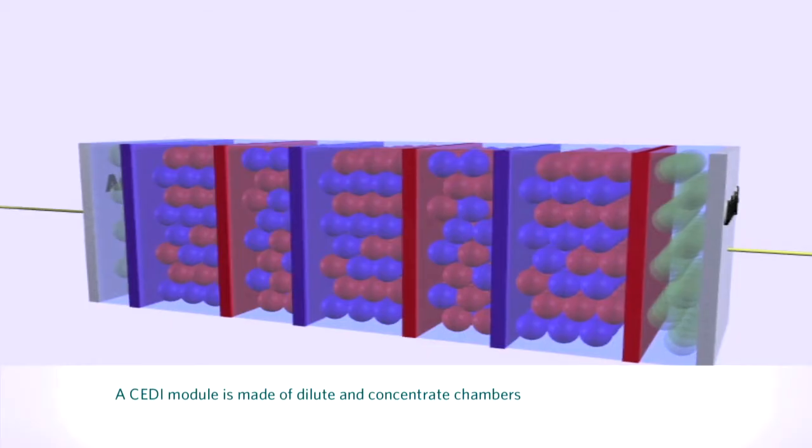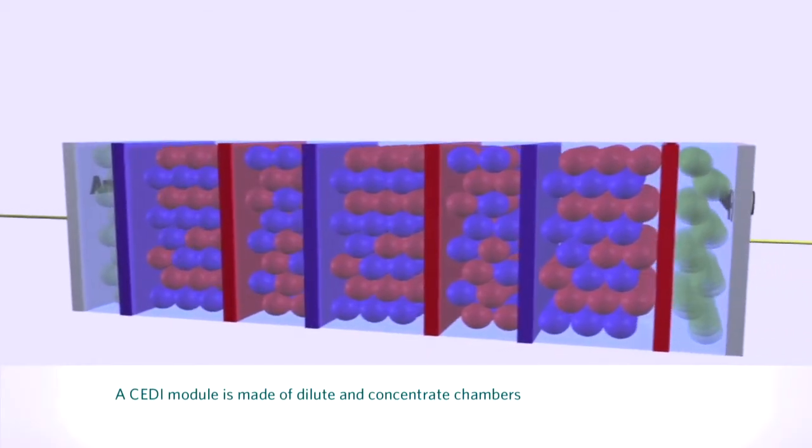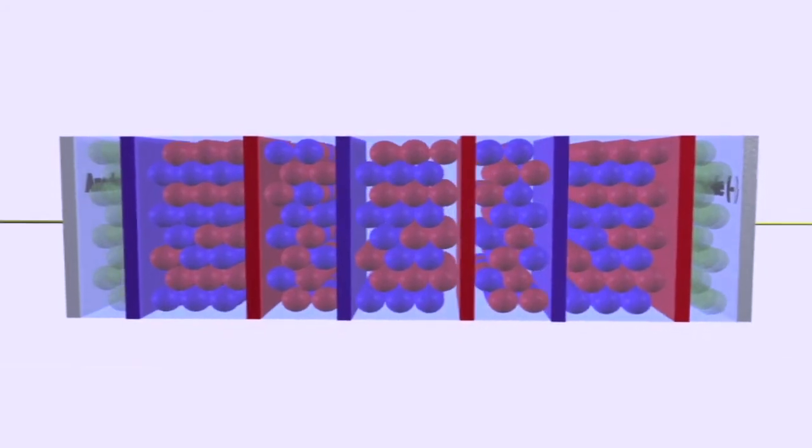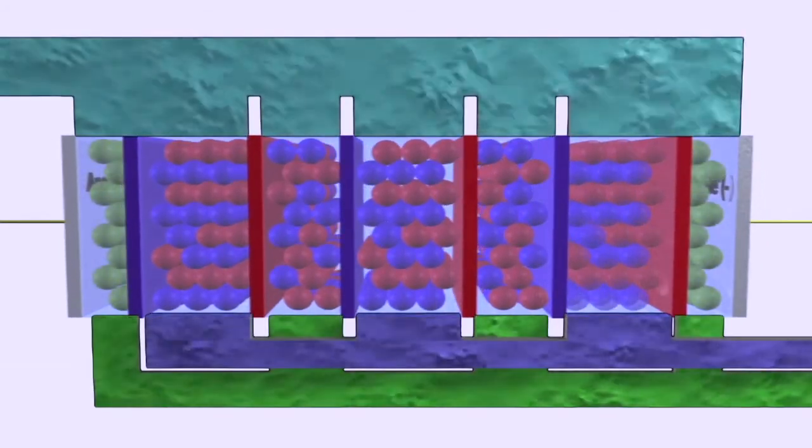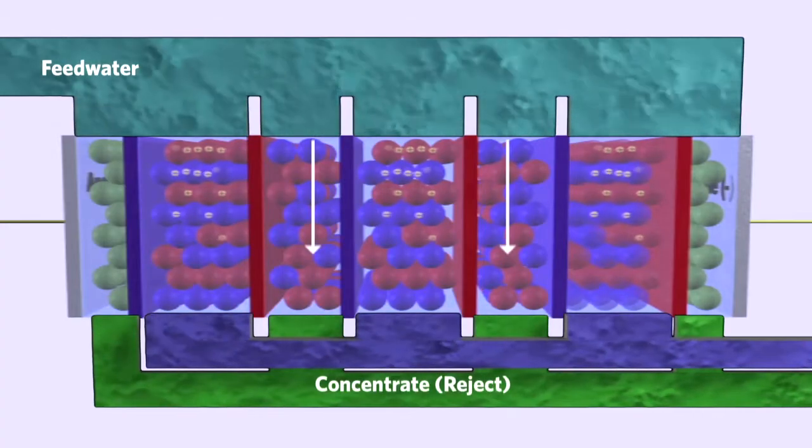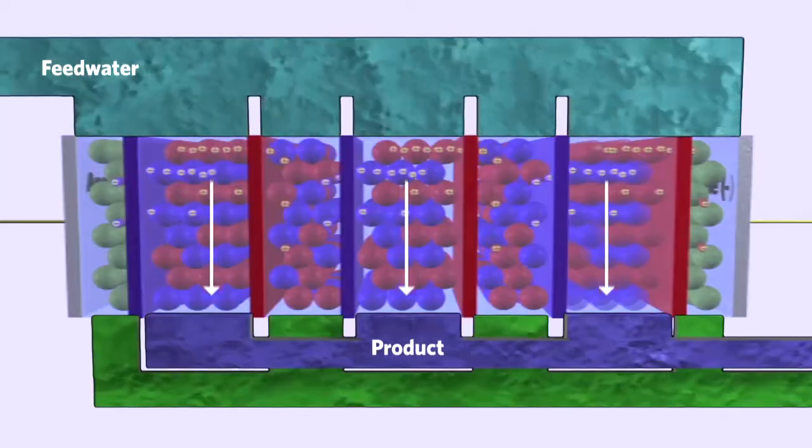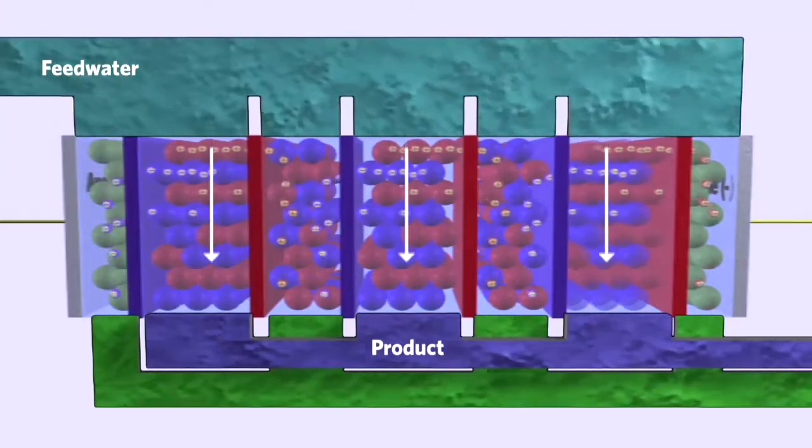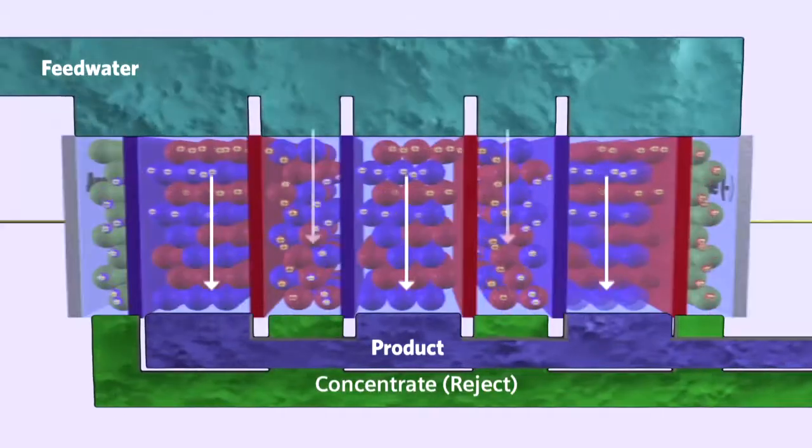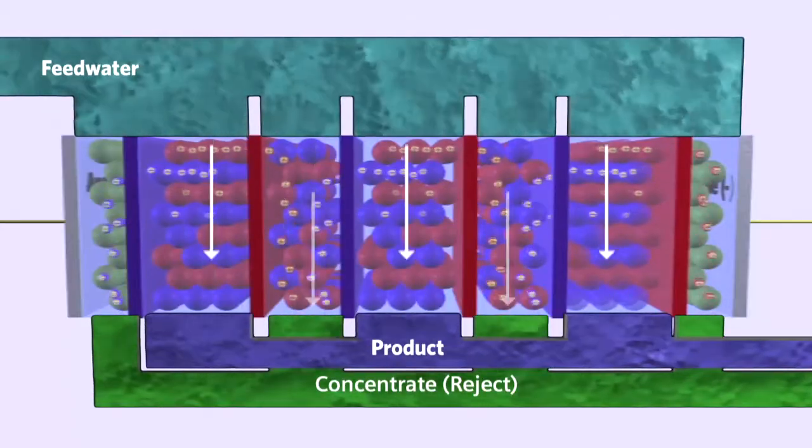we create a series of water purification compartments, alternating with compartments where the ions are concentrated. As feed water is pumped into the system, it is diverted into separate compartments, mainly the concentrating compartment and the purification or dilute compartment. These water streams remain separated throughout the process, because only ions can pass through the membranes.